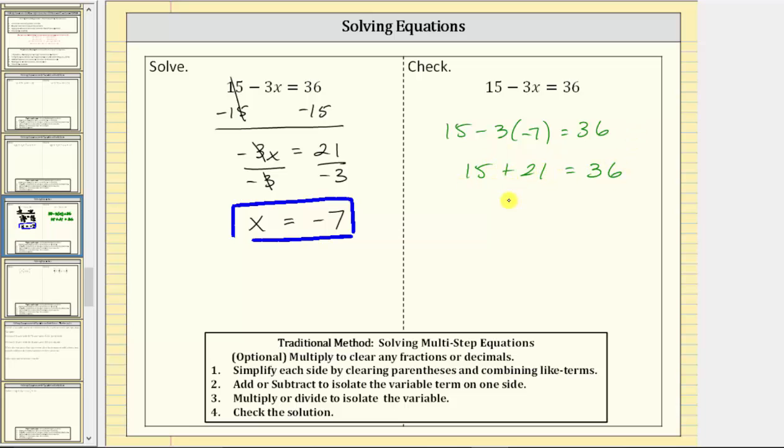15 plus 21 is 36. 36 equals 36 is true, verifying our solution is correct. I hope you found this helpful.